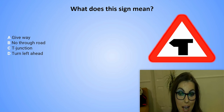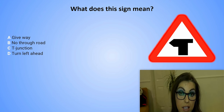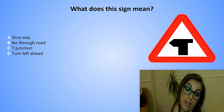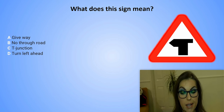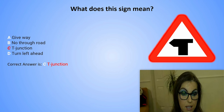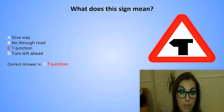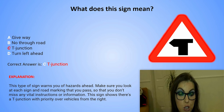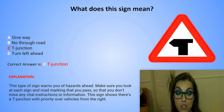What does this sign mean? A. Give way. B. No through road. C. T-junction. Or D. Turn left ahead. The correct answer is C. T-junction. Explanation: This type of sign warns you of hazards ahead. Make sure you look at each sign and road marking that you pass so that you don't miss any vital instructions or information. This sign shows there is a T-junction with priority over vehicles from the right.